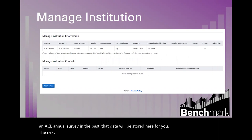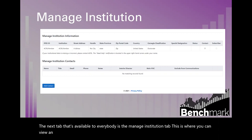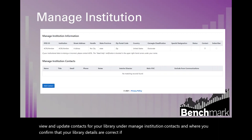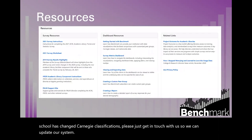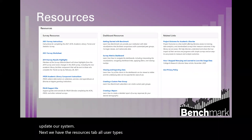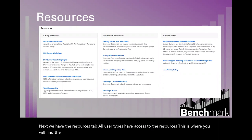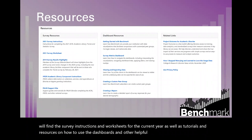The manage institution tab is where you can view and update contacts for your library and confirm that your library details are correct. If your library has moved addresses or your school has changed Carnegie classifications, please get in touch with us so we can update our system. The resources tab is available to all user types — this is where you will find the survey instructions and worksheets for the current year, as well as tutorials and resources on how to use the dashboards and other helpful links.